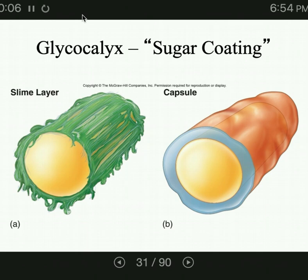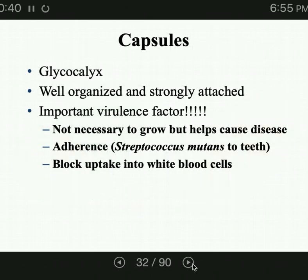Capsules are made of a substance called glycocalyx. Glycocalyx is sticky and helps bacteria stick together in colonies or to stick to other things like a human cell. When glycocalyx is organized and firmly attached, it's called a capsule. When it's disorganized and loosely attached, it's called a slime layer. Slime layers are involved in biofilms, which we discussed in chapter one. Capsules are important virulence factors — they help the bacteria attach to human cells, and they also prevent our immune cells from ingesting and digesting them.